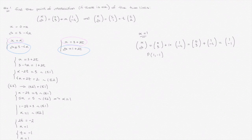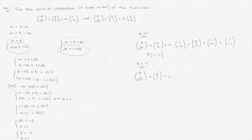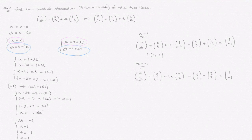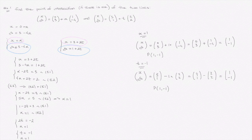Just to show we could have used t equals negative 1 in the second line: xy equals 3, 1 plus negative 1 times (2, 2), which gives 3, 1 minus 2, 2, equaling (1, -1). This confirms that the point of intersection is the point P with coordinates (1, -1). And that's how we find the point of intersection of two lines written in their vector form.